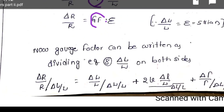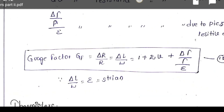Now the gauge factor can be written by dividing equation 8 — that is delta L by L on both sides — you will get the equation of gauge factor. The gauge factor equals delta R by R divided by delta L by L, which equals 1 plus 2V. This is the derivation regarding gauge factor. Simply remember: the ratio of per unit change in resistance to per unit change in length is known as gauge factor.